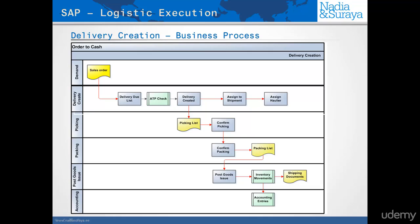One operator would say, show me all the deliveries that need to be picked. He runs the transaction, selects the first delivery that needs to be picked, goes away, does the picking, puts the picked materials at the packing station, updates the delivery document, and then refreshes it. It shows him the next delivery because once you update the delivery, it's no longer relevant for picking — it doesn't exist in this list or queue for the first operator.